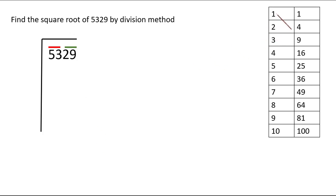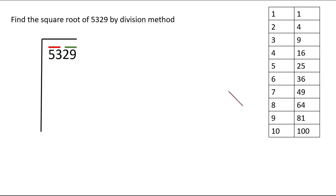This table shows the squares of the first 10 natural numbers. We need to find a number to write on both sides such that both numbers are the same and when multiplied give 53 or a little less than 53. Trying 7: 7×7 is 49; 8×8 is 64 which is bigger than 53, so we go with 7. We write 7 above and get 49, and subtracting from 53 gives a remainder of 4.